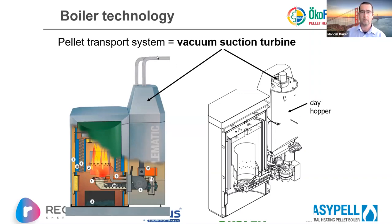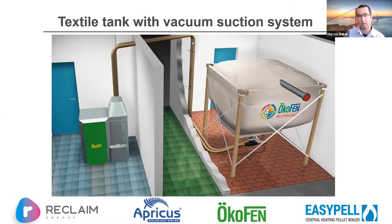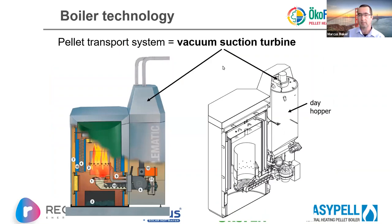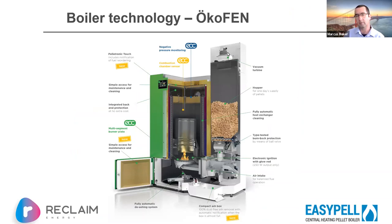The easiest way to move pellets from storage is by a vacuum system, and the majority of companies now supply their boilers with one as standard. 'Vacuum' is a slight misnomer — you've actually got a fan that blows air across the end of the pellet store outlet, drawing pellets out of the container and blowing them through to the boiler where they fall into the day hopper.